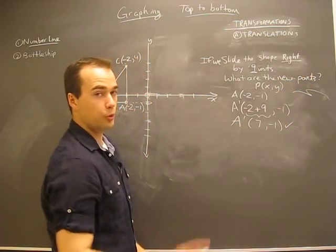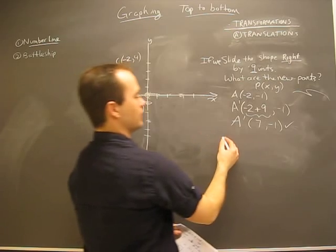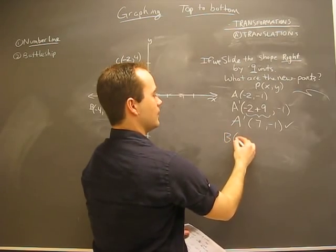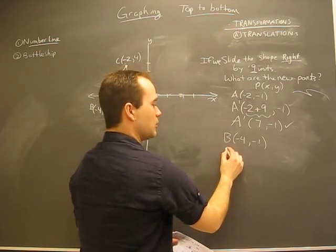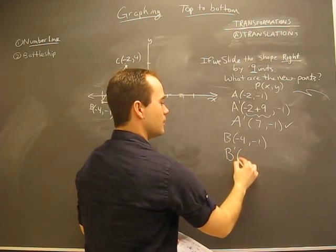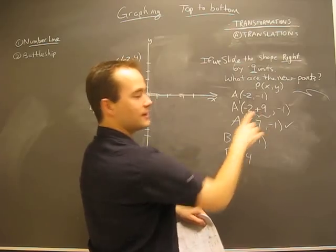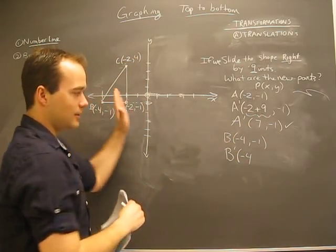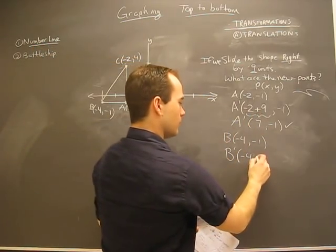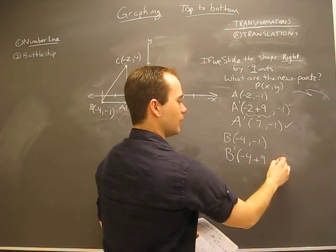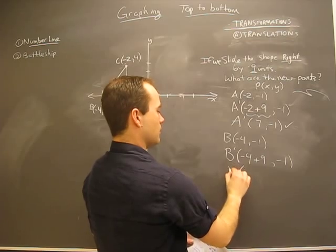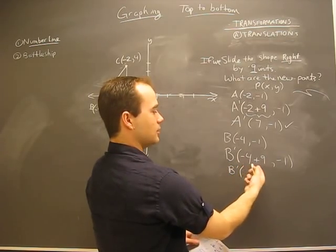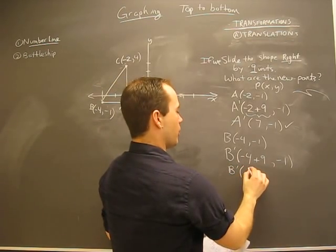That is our new point, first one. B, negative four, negative one. We can go a little faster here now that we know what we're doing. Follow the same pattern. B prime will be negative four plus nine because we're adding nine units to the right, and then y doesn't change again. This becomes B prime is positive five, negative one.